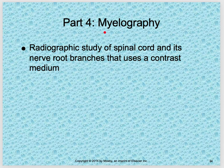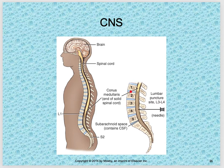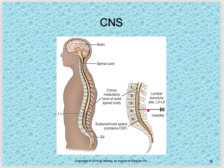Moving on to part four: myelography — a radiographic study of the spinal cord and its nerve root branches using a contrast medium. Contrast is introduced into the CSF fluid surrounding the spinal cord, not into the cord itself. The injection site is L3-L4, below the conus medullaris where the smaller nerve branches are less compact, reducing the risk of injecting into the solid spinal cord while still accessing the CSF that encapsulates it.